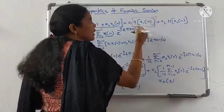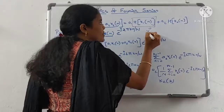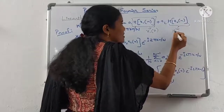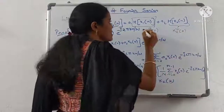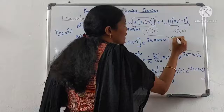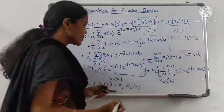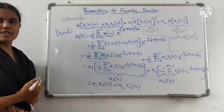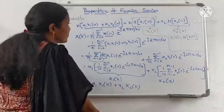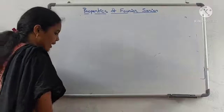Here, the Fourier series operator of x1(n) is nothing but X1(k), and the operator of x2(n) is nothing but X2(k). This is the linearity property, the first property. Now let us see the second property of Fourier series, which is the time shifting property.